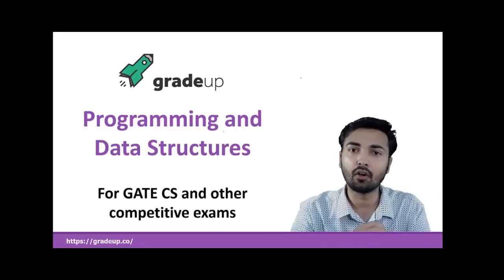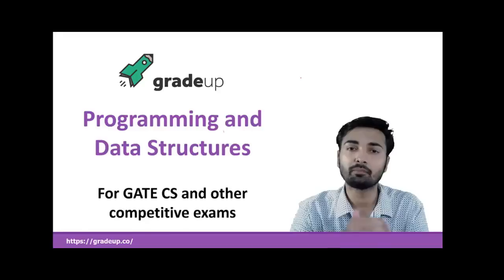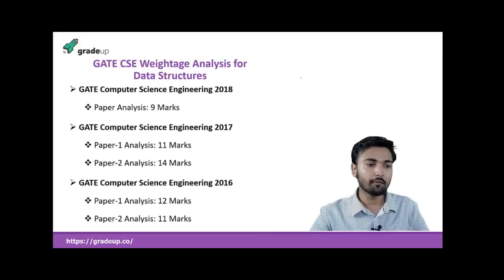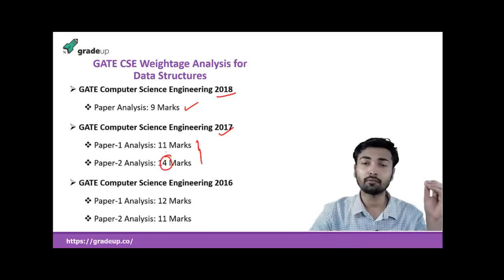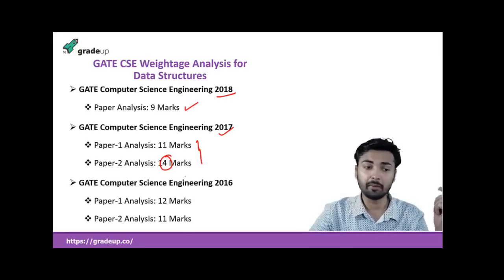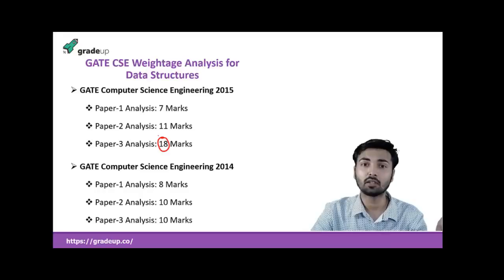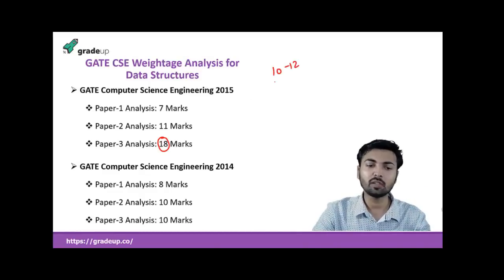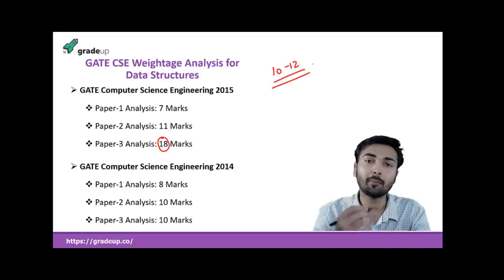This is the first introductory video on data structures. We'll see what data structure means and what topics we'll cover in upcoming videos. Looking at previous year GATE trends: in 2018 it was asked for 9 marks, in 2017 even 14 marks, and in 2015 as many as 18 marks came from this subject. So approximately one-fifth of the paper can come from programming and data structures. Questions are of average complexity — just apply your brain and you will get the answers.